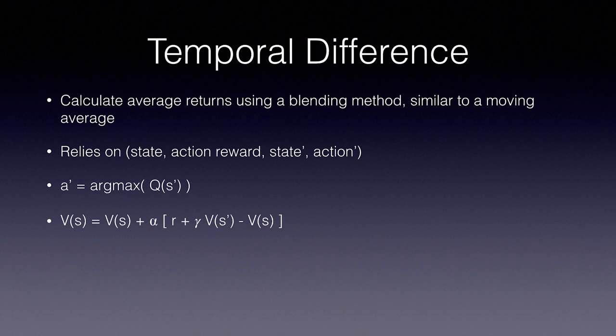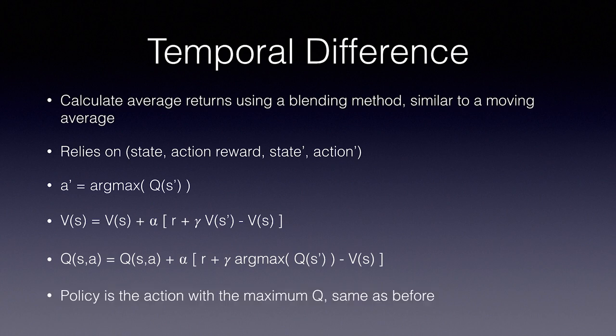Looking at this in terms of the original Bellman equation, it looks this way. And in terms of queue learning, it looks like this. The updated queue table for state and action is equal to the previous queue table plus alpha times the reward plus gamma times the argmax of queue for state prime minus the original queue value that we're updating. Gradually, the values will converge and updates will get smaller and smaller. Policy in any given state is simply the action with the maximum queue, the same thing we were doing before.